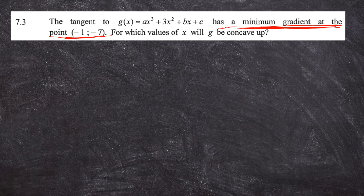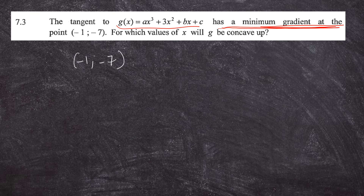Recall the previous session from November 2022 on question nine — we had something about minimum distance. To get the minimum distance, we first get an expression for the distance, then we differentiate that expression and get the x values that minimize the distance. Now it's quite different: you have already been given the x value that minimizes the gradient. The tangent to g has a minimum gradient at the point (-1, -7), meaning the gradient is minimum at x = -1. We'll use that information as we proceed.